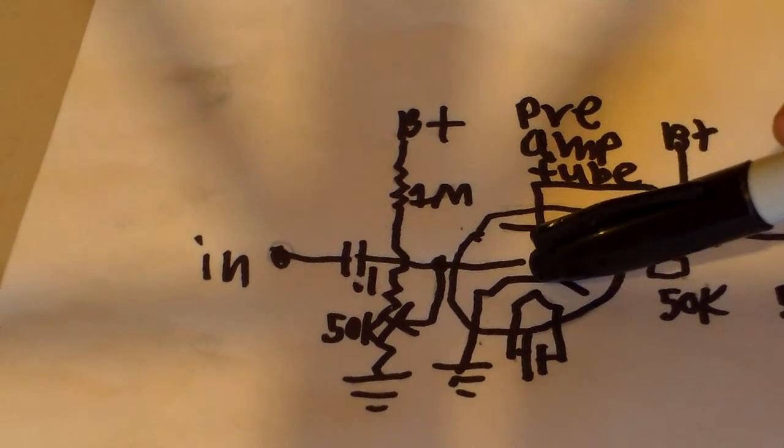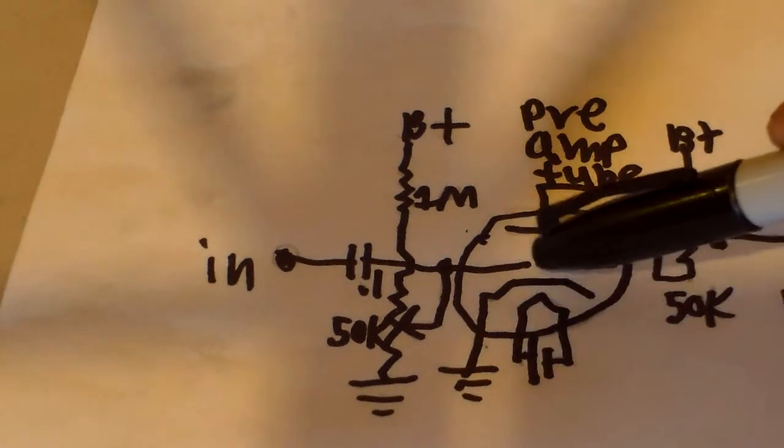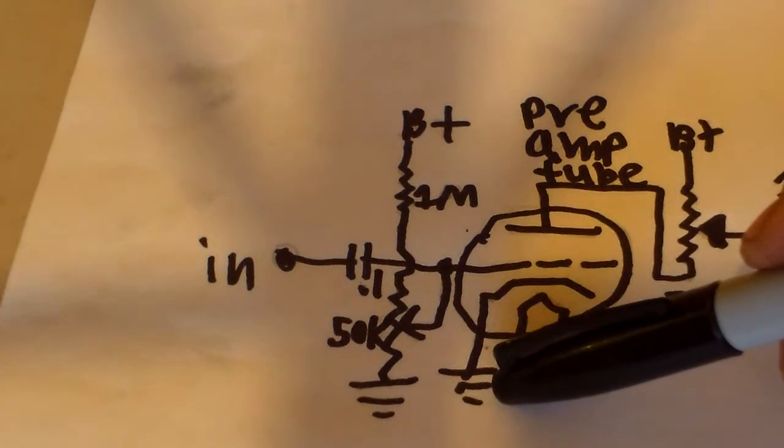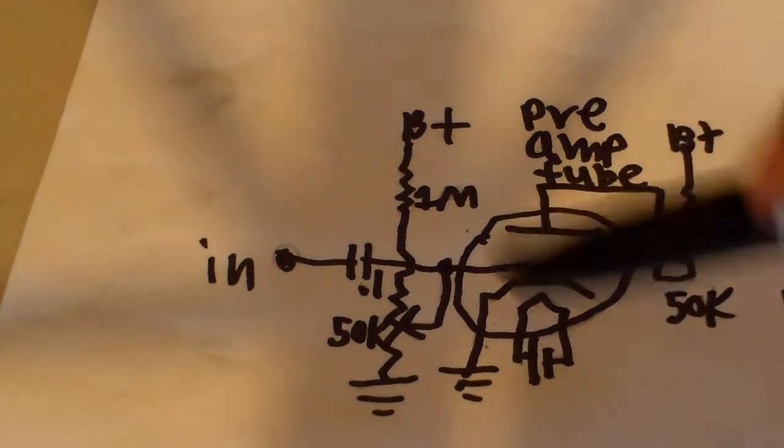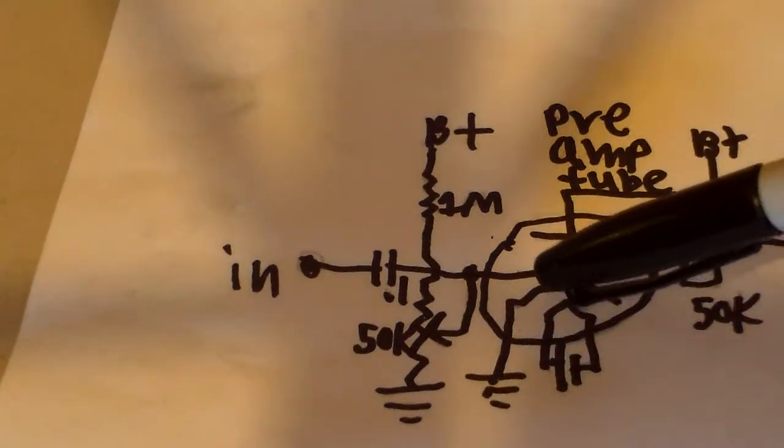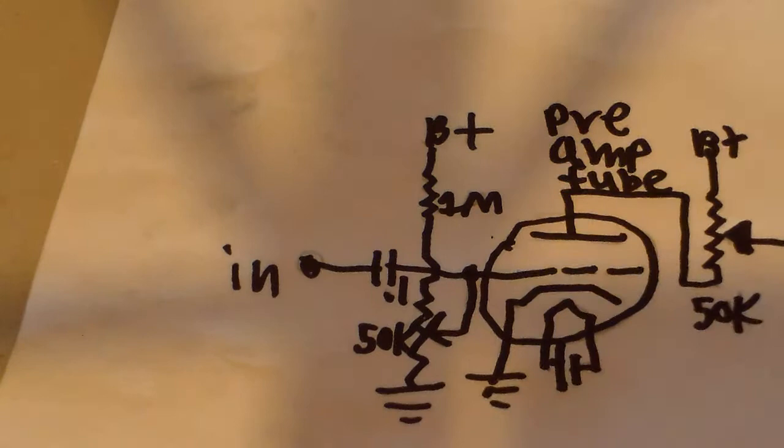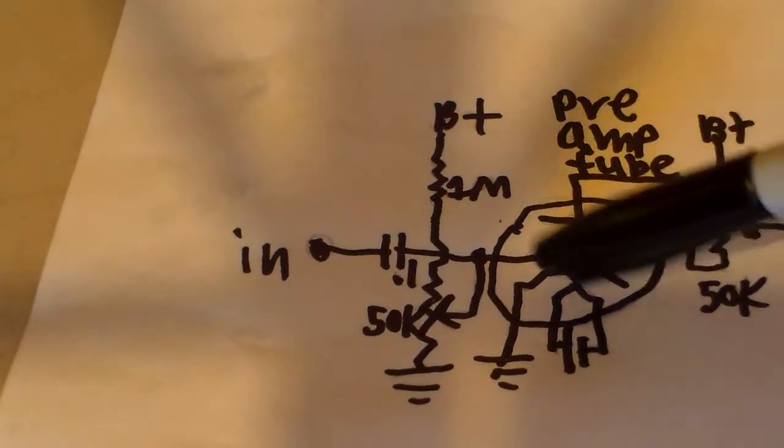So right here at the cathode, right now we're just gonna put it to ground. This isn't a really complicated thing. Usually there'd be some resistor and a capacitor there to keep this away from being direct ground, but this is basic. So for now let's just put this to ground.